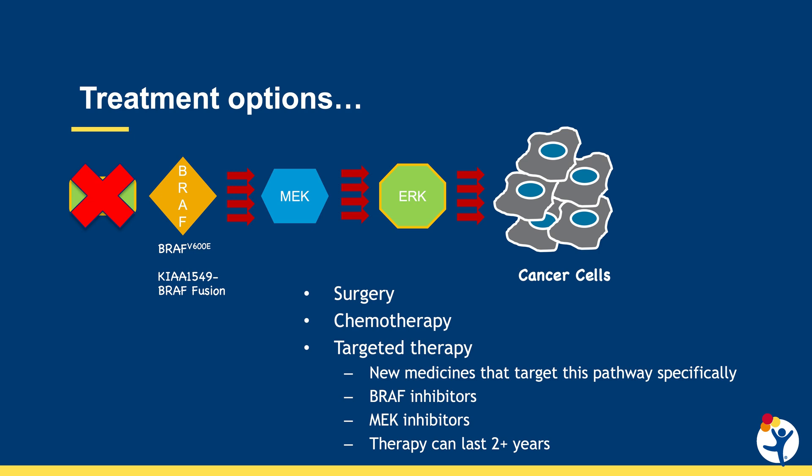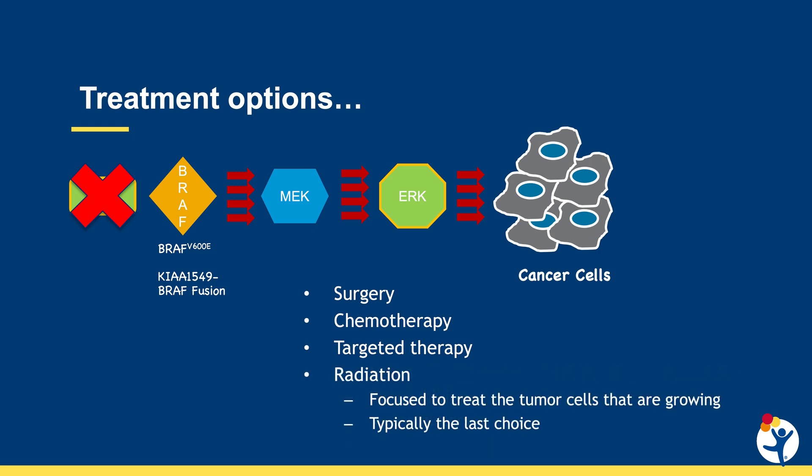The other major development in recent years is targeted therapy. This is the most exciting area of low-grade glioma treatment, where new medications target the pathway specifically — such as BRAF inhibitors and MEK inhibitors, as well as other inhibitors being developed over time. This therapy is oral and can be given without IVs. The one downside is that therapy can last up to two years. Finally, there are some patients who eventually need radiation — focused x-rays used to treat the growing tumor cells — but this is typically a last choice in low-grade gliomas.